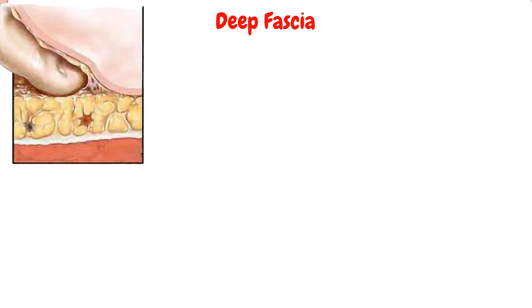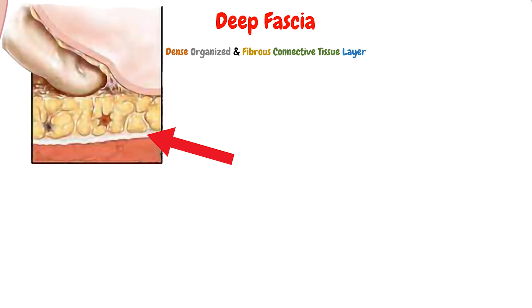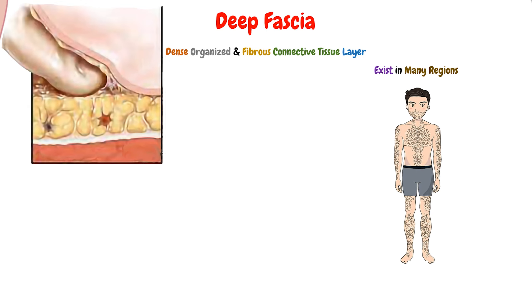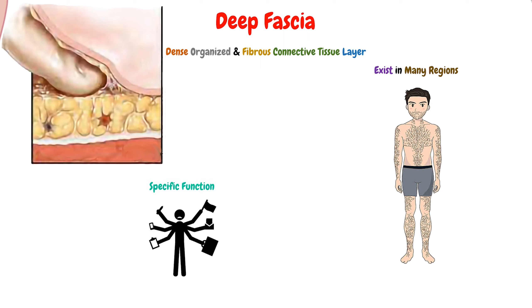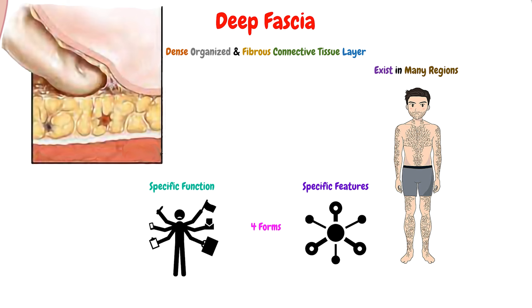The deep fascia, which we defined in the previous video as a dense, organized, and fibrous connective tissue, will exist in many regions. In every region it exists, it will perform a specific function and have specific features. We have about four forms that the deep fascia can present with in different regions of the body. It may present with other forms, but these four are the main ones.